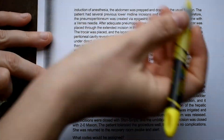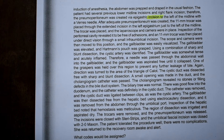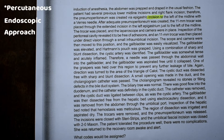So far we know that they did an incision somewhere along the lower stomach area. After adequate pneumoperitoneum was created, an 11-millimeter trocar was placed through the extended incision in the left epigastrium just to the left of the midline. The trocar was placed and the laparoscope and camera were in place. So they are using a camera, so we can assume that they are going to consider this possibly a percutaneous approach.